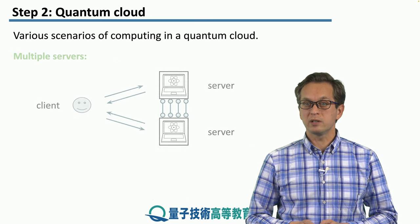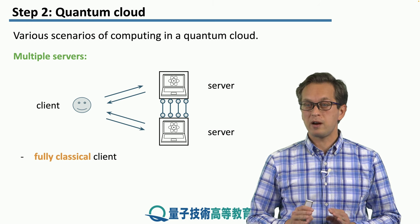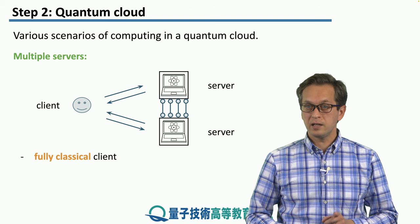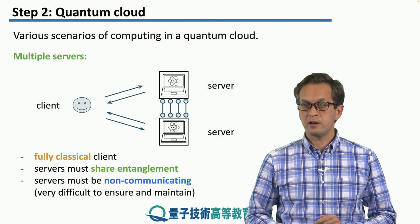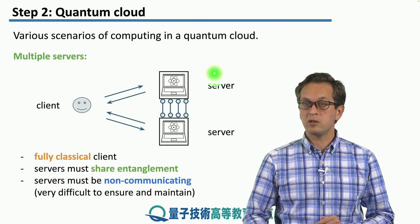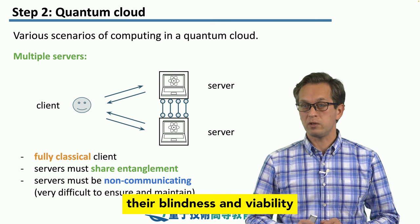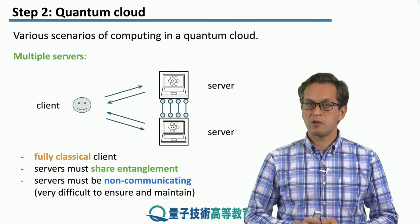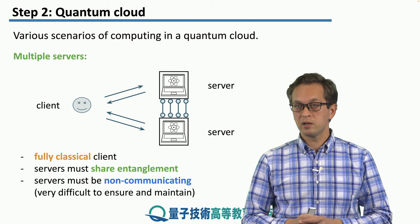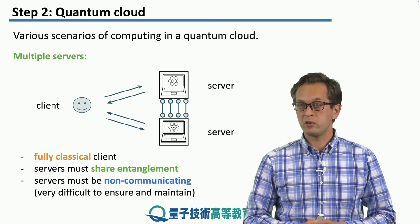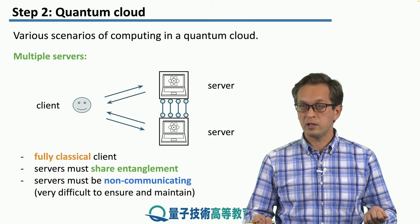Another scheme is between a client and multiple servers. In this case, the client can be fully classical and does not require any quantum resources whatsoever. On the other hand, the servers must share entanglement. Not only that — the difficult part is that the servers must be non-communicating; in other words, they cannot send messages between each other. If they can, then blindness and verifiability will be broken, as we will see later. This non-communicating requirement is very difficult to ensure and maintain. We might separate the quantum servers to be long distances apart, but ensuring that these servers remain non-communicating is very difficult.